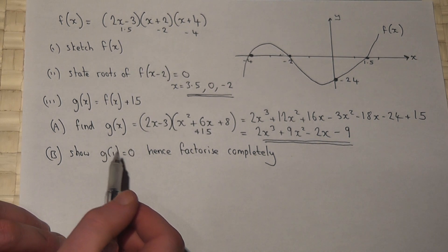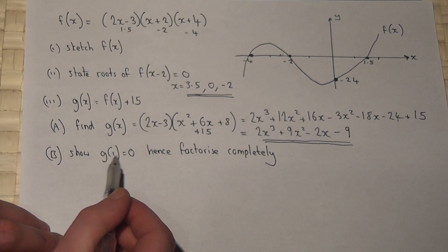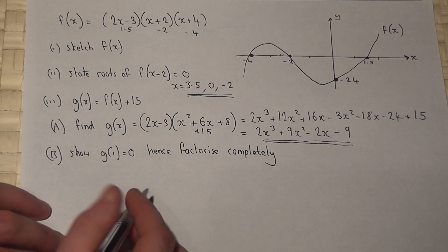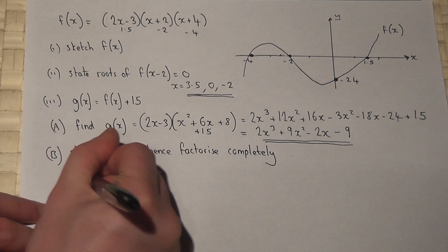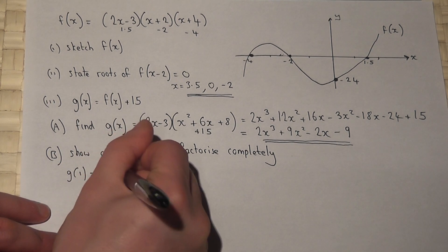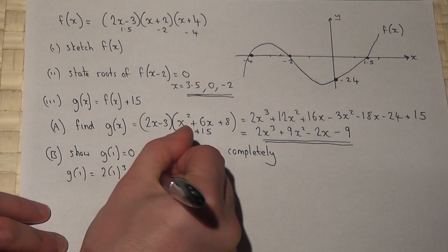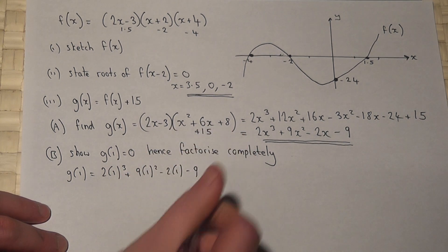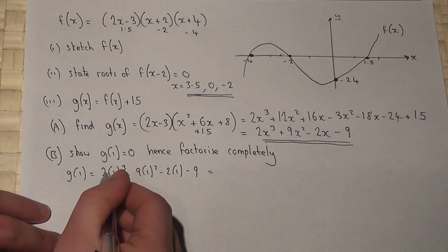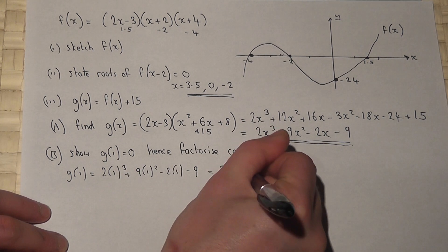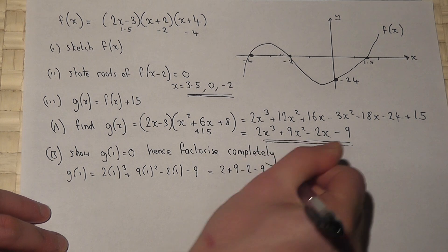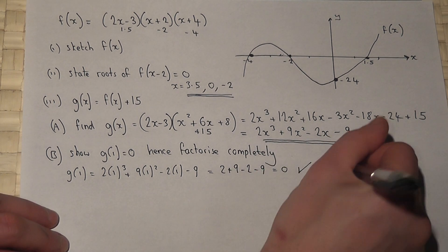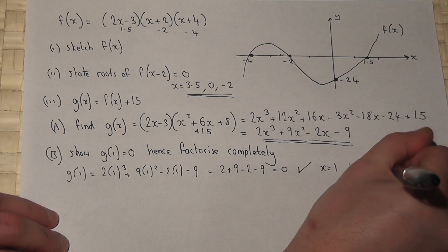We're then asked to show that x equals 1 is a root. If I substitute 1 into g of x, g of 1 equals 2 times 1 cubed plus 9 times 1 squared take 2 times 1 take 9. This equals 2 plus 9 take 2 take 9, which does indeed equal 0. So x equals 1 is a root.